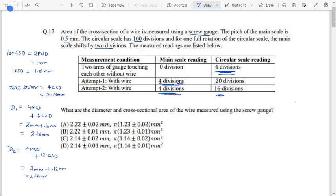Now, whenever an experiment is done multiple times, how do we find the mean value? We find the mean value by taking the average. So we can say that mean value of the diameter will be D1 plus D2 by 2, which will be 2.14 mm.